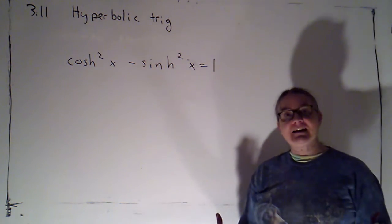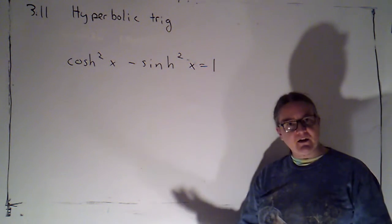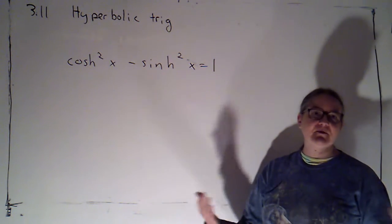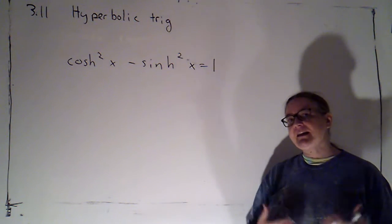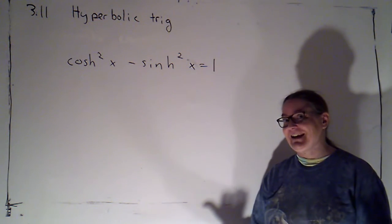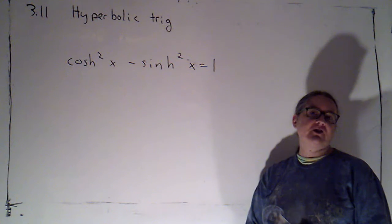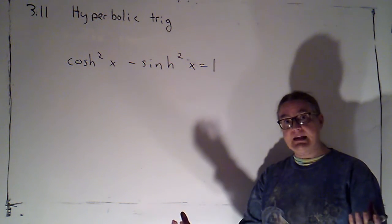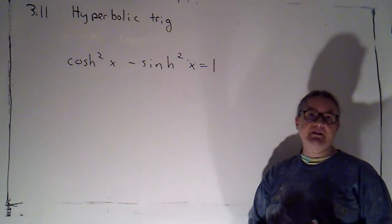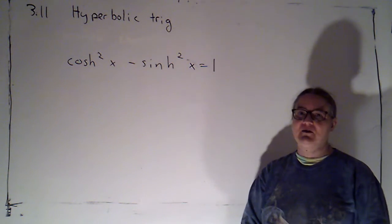Now with the Pythagorean identity for regular trig, the main one is that cosine squared plus sine squared equals one, but we know we can manipulate that to get two additional identities: one that gives me a relationship between tangent squared and secant squared, and one that gives me a relationship between cotangent squared and cosecant squared.